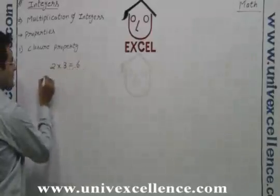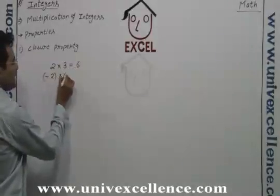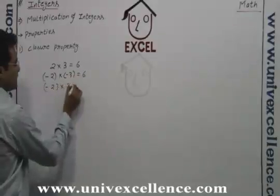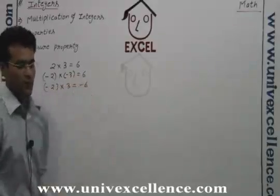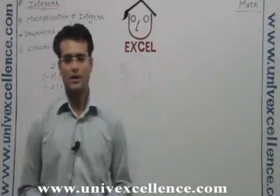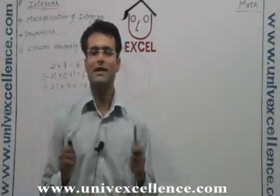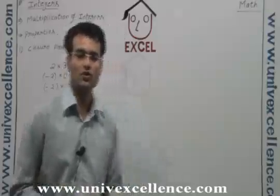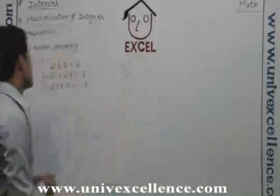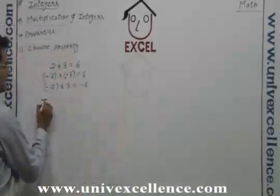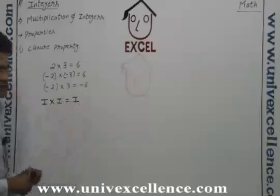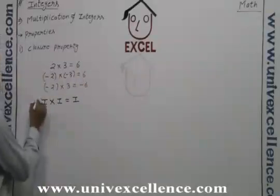2 into 3 is 6. Minus 2 into minus 3 is also 6. Minus 2 into 3 is minus 6. It means whatever the integer we multiply, we get an integer. It means we can say that closure property is followed. So closure property by the integers on the multiplication is followed. So the thing we can say is integer multiplied by integer also an integer. This is the closure thing.